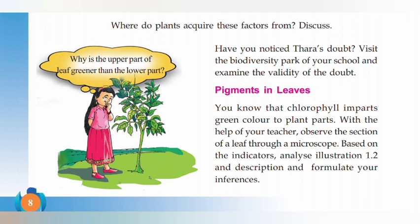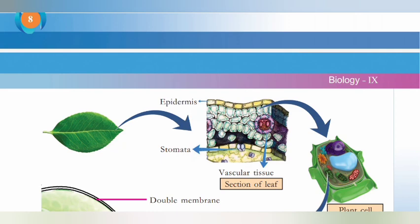Now, what will this class be about? Pigments in leaves — we will study chlorophyll. As you know, chlorophyll imparts green color to plant parts. With the help of your teacher, observe the section of a leaf through a microscope. You can observe the diagram from the microscope view.